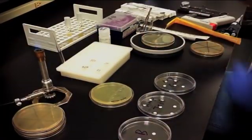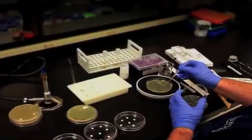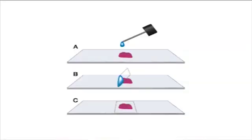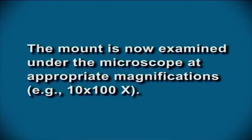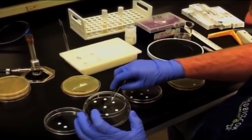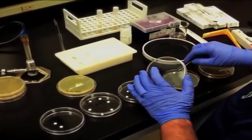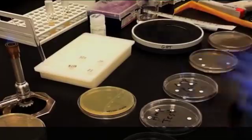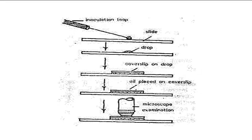Let us learn about the wet mount method. Wet mount is a method for observing microbial samples under a microscope. A desired liquid sample is placed on the slide as shown in figure 2, and a cover slip is placed without forming any air bubbles. The fluid spreads in a thin layer between the cover slip and the slide. The mount is examined under the microscope at appropriate magnifications, for example 10 × 100x. This method is commonly used to view microscopic organisms that grow on liquid media, especially when studying their movement and behavior.